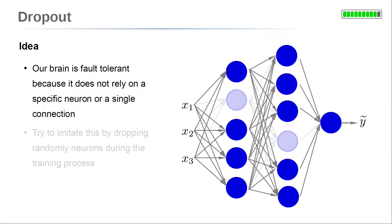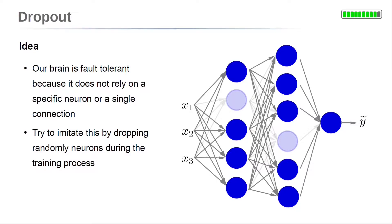On the other hand, the brain doesn't rely on a specific neuron or single connection for a desired output either. This makes our brain very robust against small distortions. The idea is to imitate this in artificial neural networks by dropping randomly neurons during the training process. Then, it cannot rely on a specific neuron and needs robust and redundant options to give the desired output.